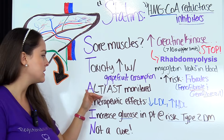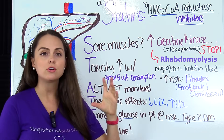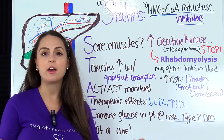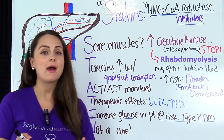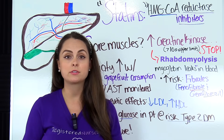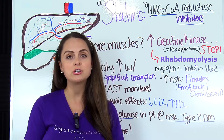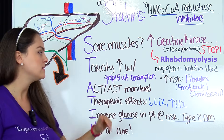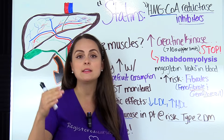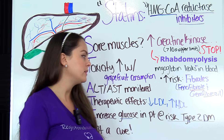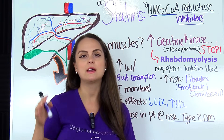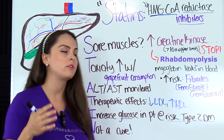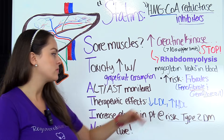A is for ALT/AST monitored. These are liver enzymes that we're going to monitor regularly on a patient taking a statin because liver failure can occur. Next, T is for therapeutic effects. As a nurse, you want to be familiar with how statins affect cholesterol levels and educate your patient on how it affects their LDL, HDL, total cholesterol, etc. To recap: statins should lower the LDL — the bad cholesterol — and they should slightly increase the HDL. They'll also lower the total cholesterol and help lower triglycerides as well, but mainly it's going to help with that LDL.